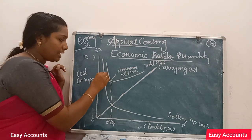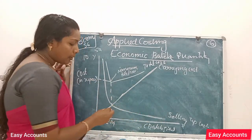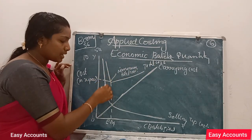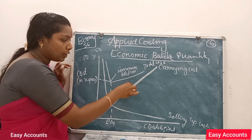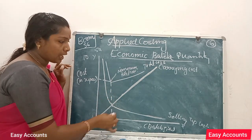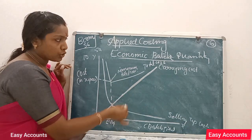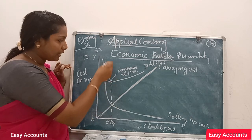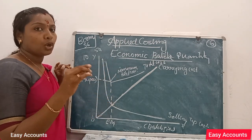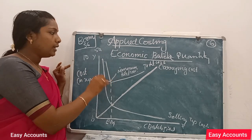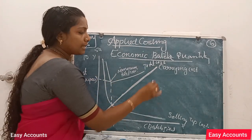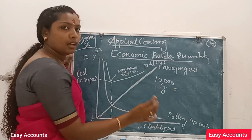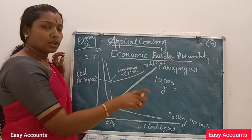The setting up cost is high when the carrying cost is low. The setting up cost is less but the carrying cost is more. The total cost is the sum of both. For example, the setting up cost gives a total cost of $16.